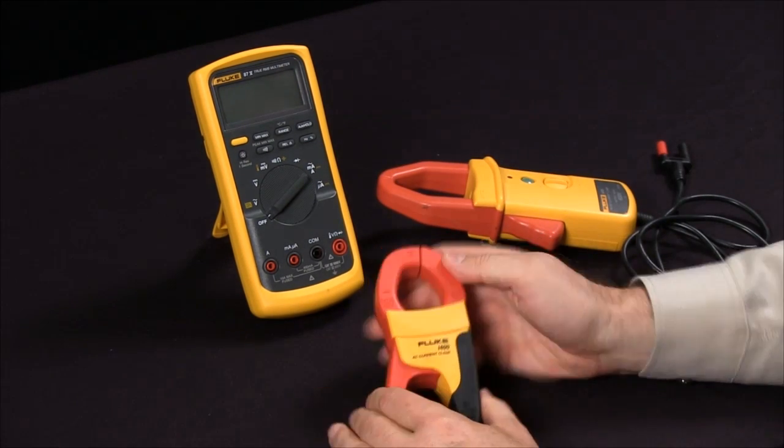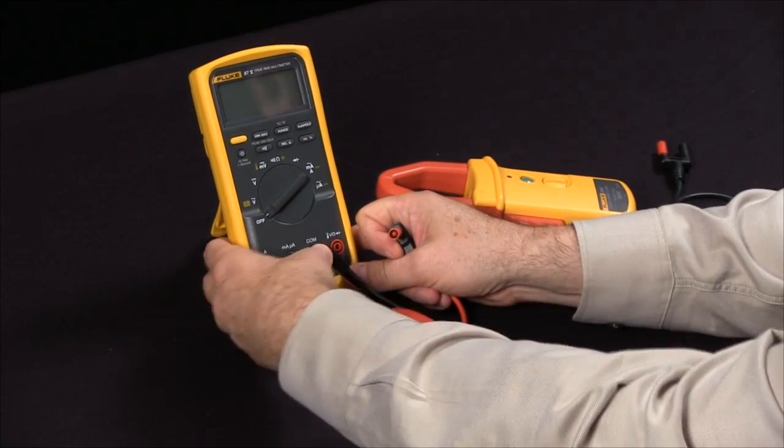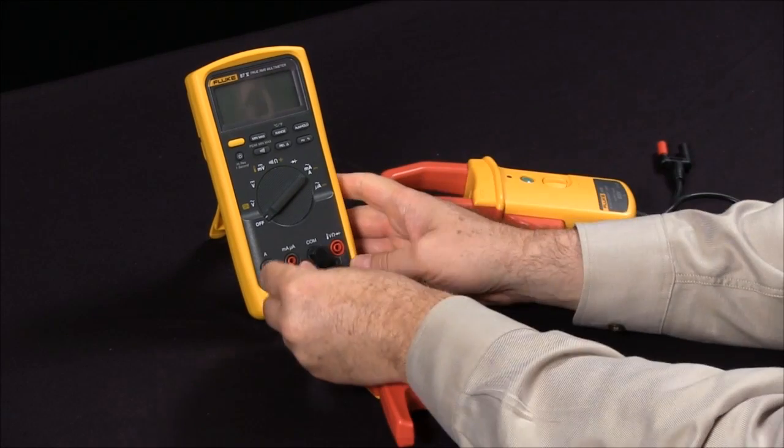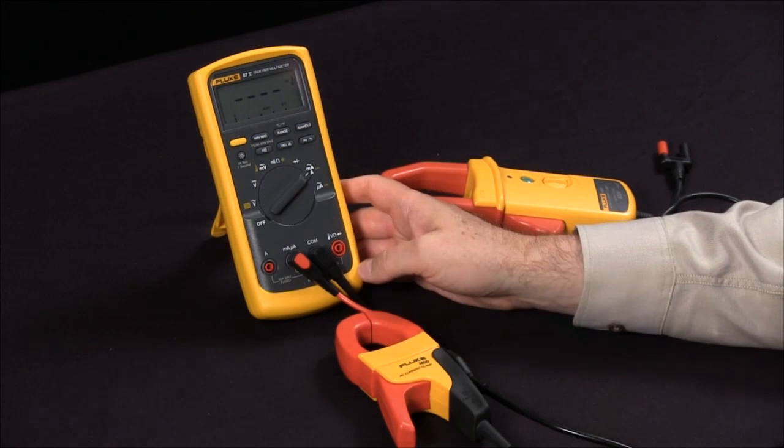To measure AC current simply insert your test leads into the jacks. Now in this case you would go into your common as well as your milliamp jacks, then set your meter to measure on milliamps.